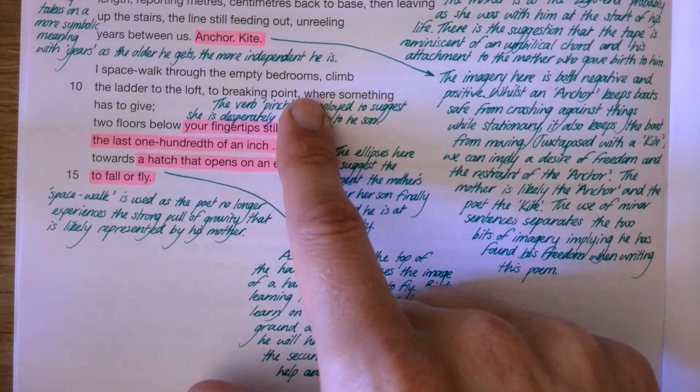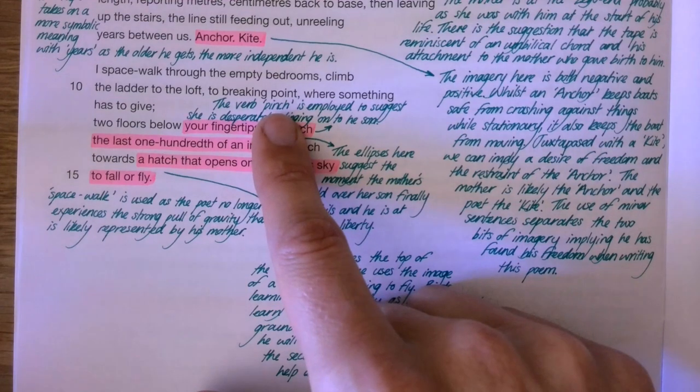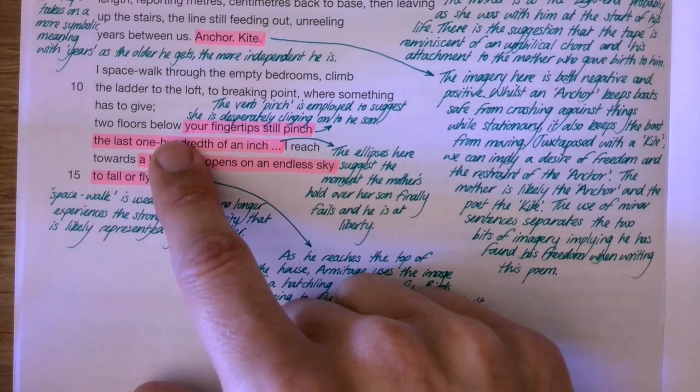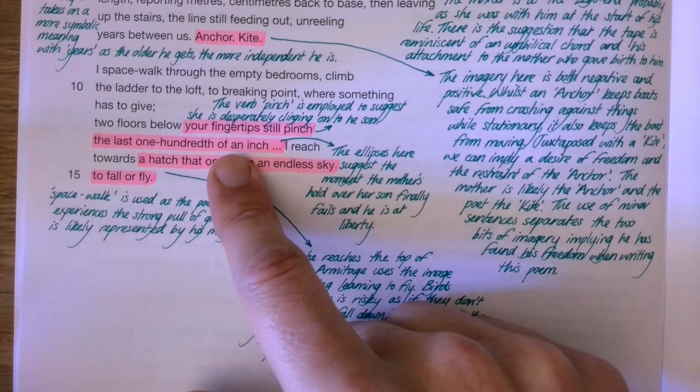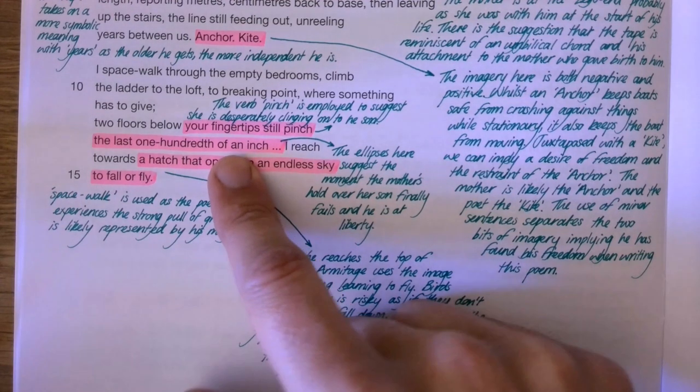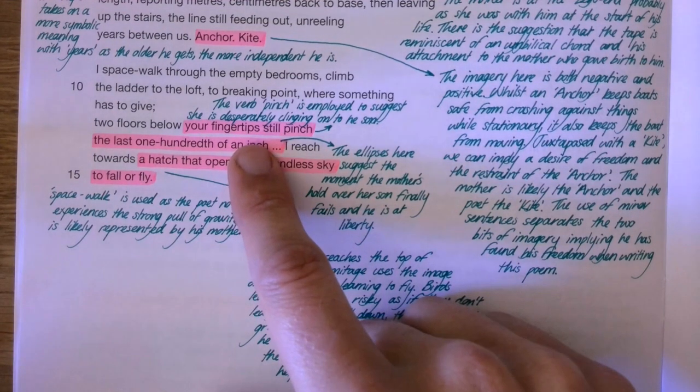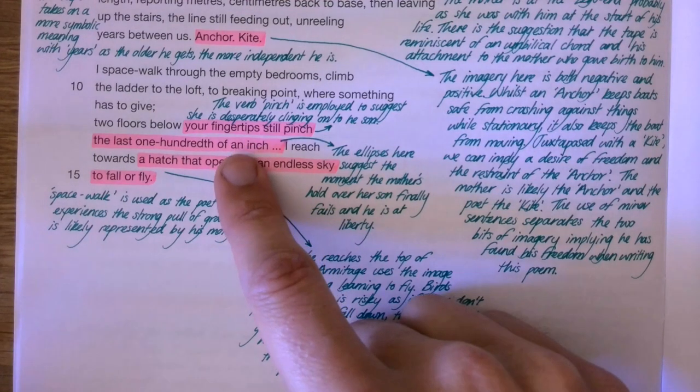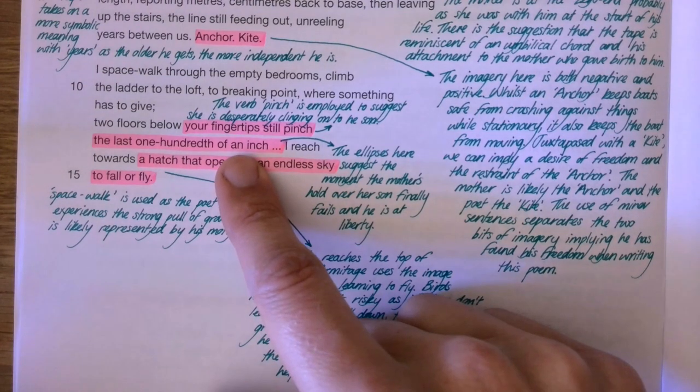He talks about he climbs to the ladder, to the loft, to the breaking point where something has to give. So the breaking point is the distance between him and his mother, and something's got to give. He goes on to say: two falls below your fingertips still pinch the last hundredth of an inch. The idea of using that verb pinch is really interesting because she is desperately clutching onto her son, still pinching with the tiniest bit of grip that she still has while he's trying to get away. So he is escaping and she's still trying to clutch hold of him, keep hold of him.